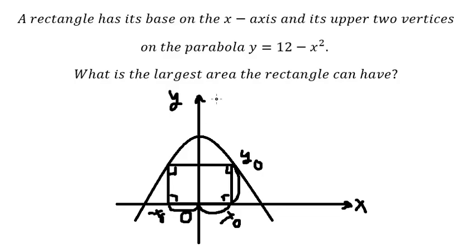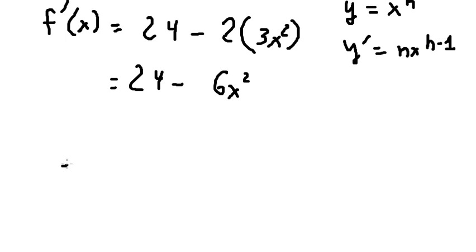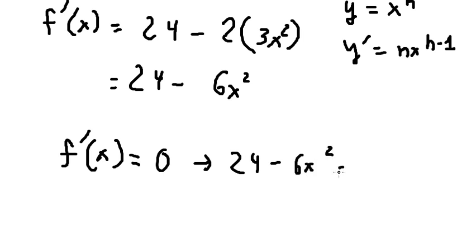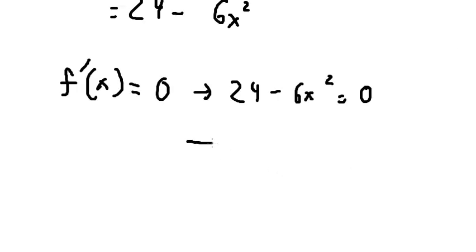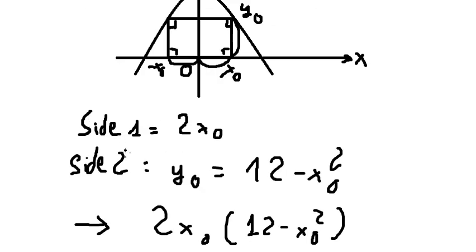So if we want to find the largest area, we need to find the critical point. Setting f'(x) = 0, we get 24 - 6x² = 0, so x² = 4. Because we want to find the sides and they should be positive numbers...